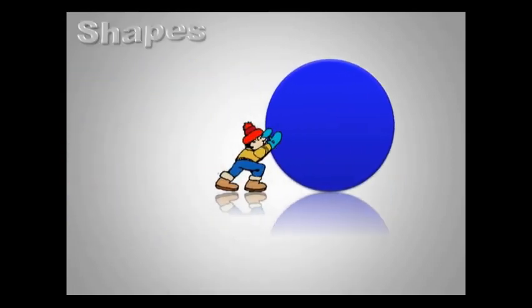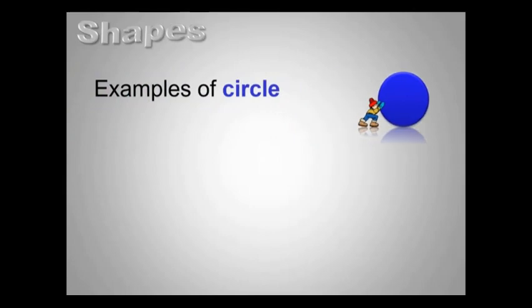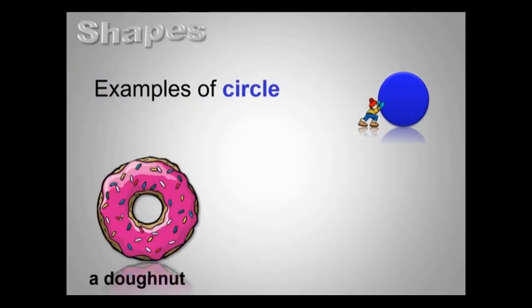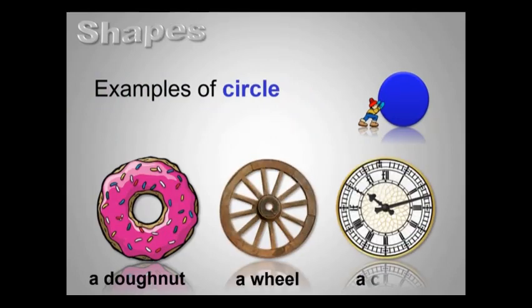This is a circle. A circle is round in shape. It has no sides and no corners. Some objects that are circle in shape are a donut, a wheel, and a clock.